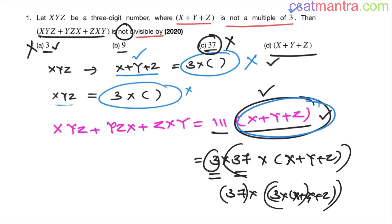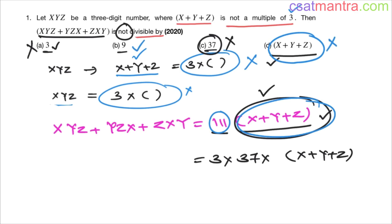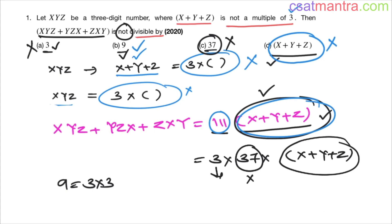Is it divisible by x + y + z? Yes — we can write the sum as (x + y + z) × 111, so that is also not our answer. Is it divisible by 9? To be divisible by 9 we need 3², but we only have one factor of 3 here, and x + y + z is also not divisible by 3. So this number is NOT divisible by 9. Our answer is B.